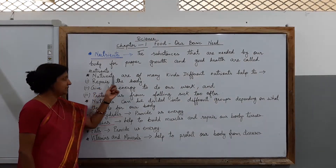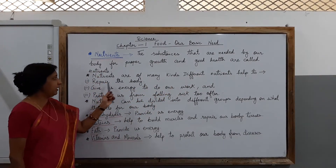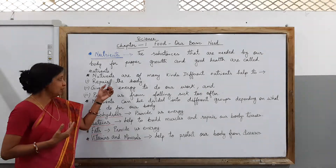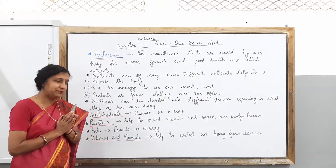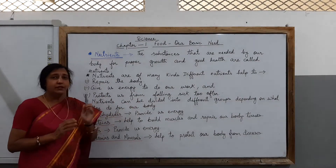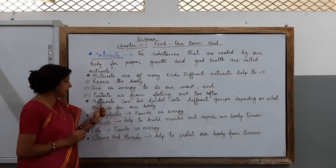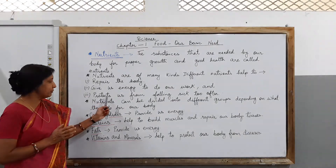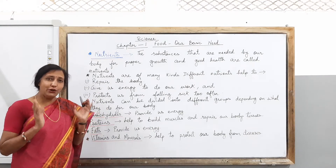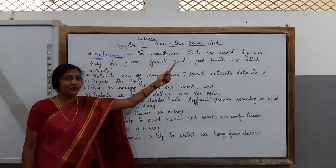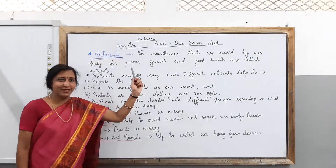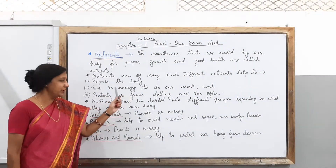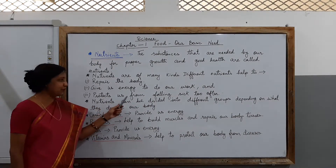Nutrients are of many kinds. Different nutrients help to prepare and repair the body — meaning whatever things are to be prepared in your own body system, those nutrients help in preparing those things. Second, nutrients give us energy to do our work. Third, nutrients protect us from falling sick too often. So the three functions of nutrients are: they help in repairing the body, they give us energy to do our work, and they protect us from falling sick too often.